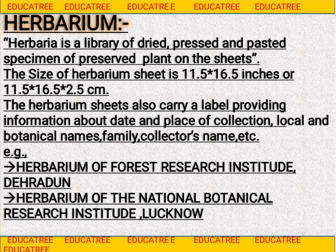Herbarium kya hai? Herbarium ek taxonomical aid hai, jis mein hum specimen ko dry aur press karke herbarium sheet par paste karte hain. Is mein hum dead plants ko preserve karte hain. Woh sheet jo hum drying mein use karte hain, woh normal sheet nahi hoti — the size of herbarium sheet is 11.5 × 16.5 inches.